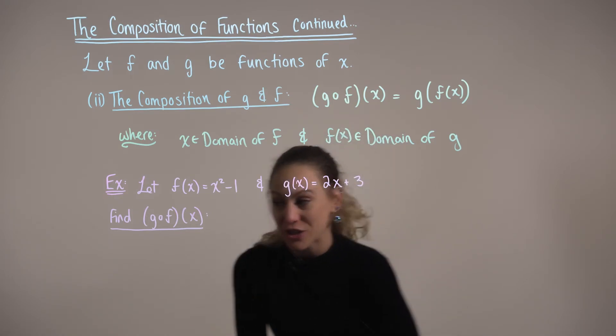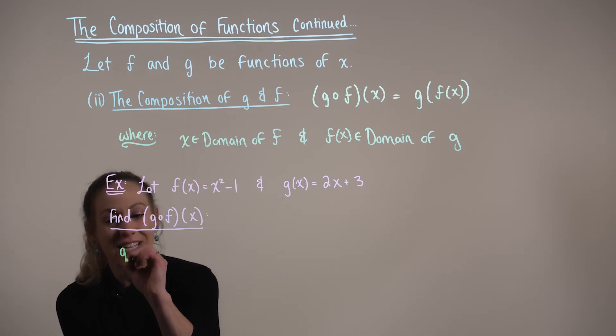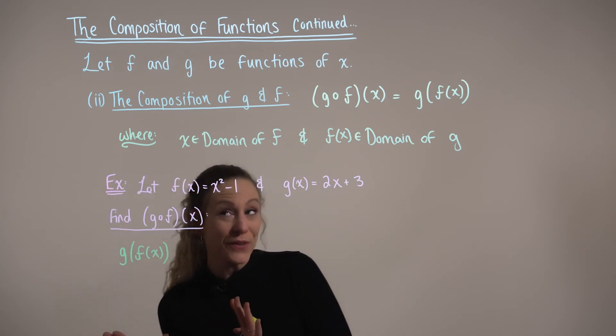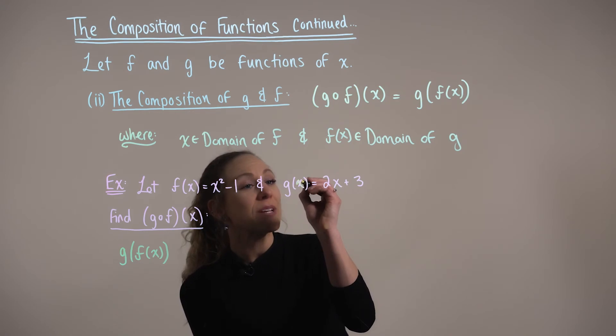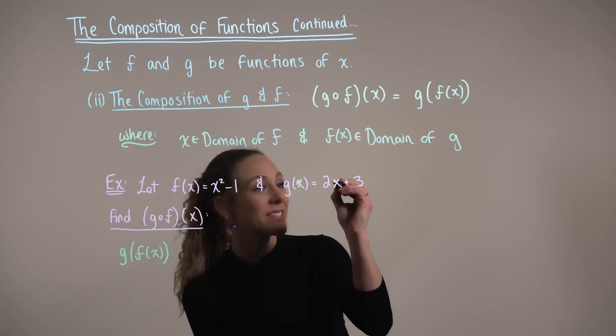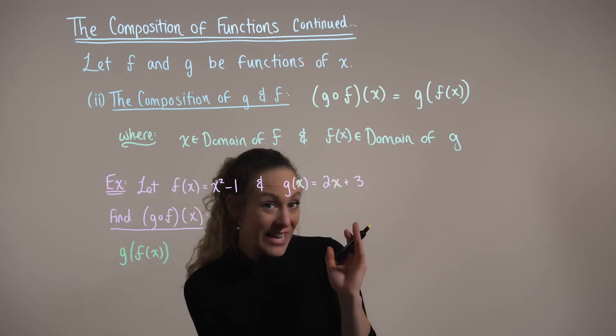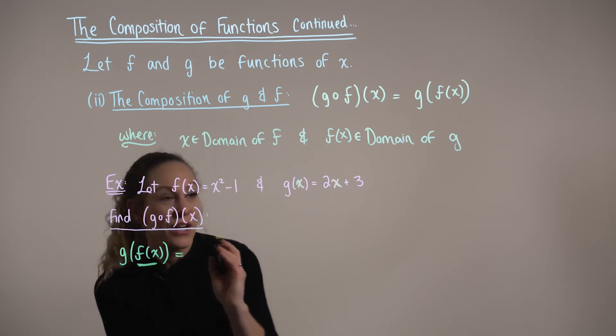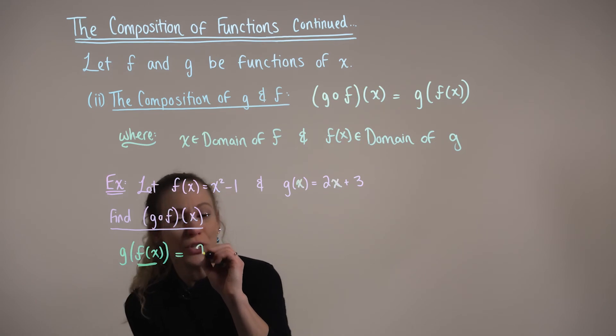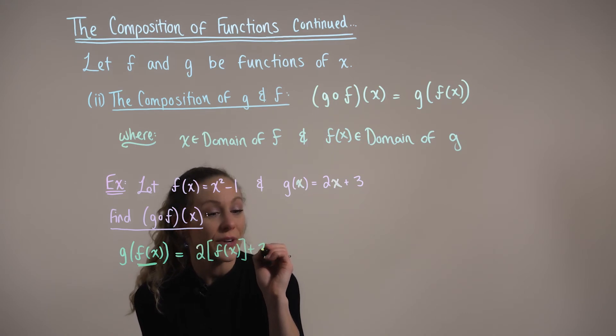So using our definition, we can rewrite this as g of f of x. And pause here and look back up at our g of x function. Anywhere we see the input value x, we now want to replace this x with the function f. So we can rewrite this as 2 multiplied by f of x plus 3.